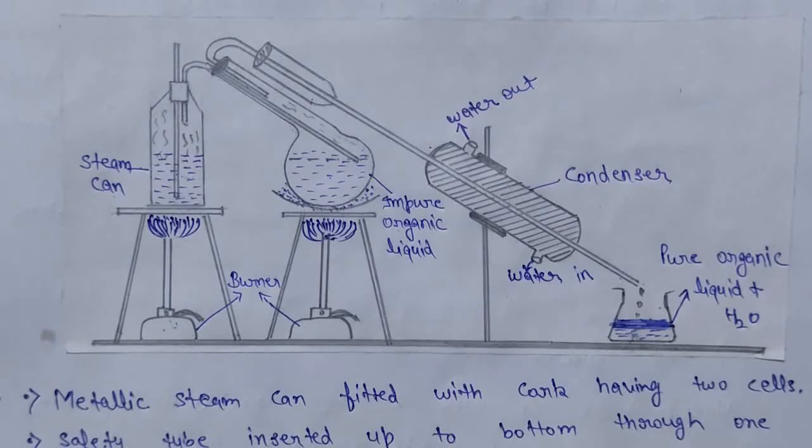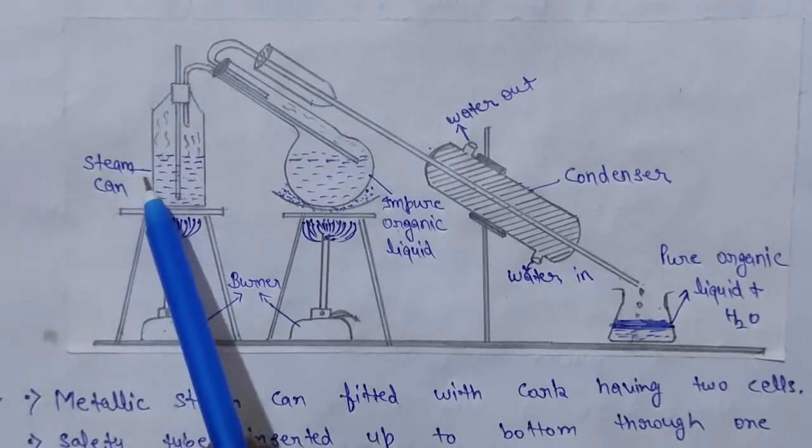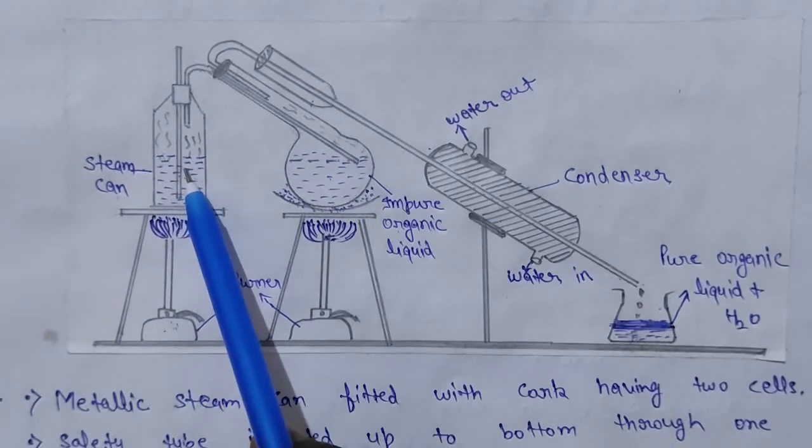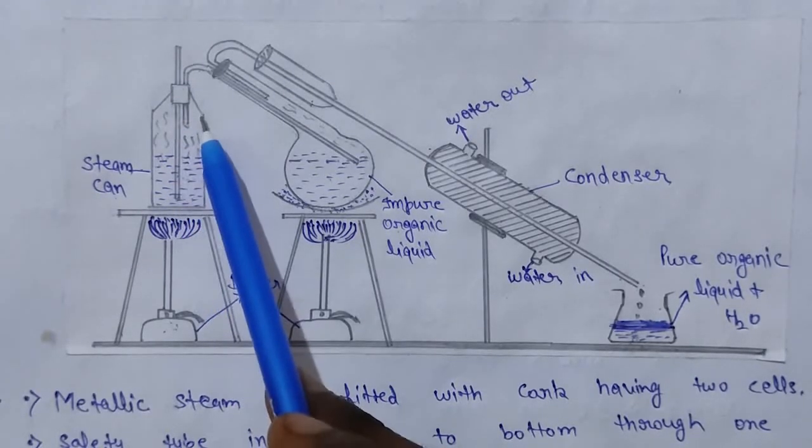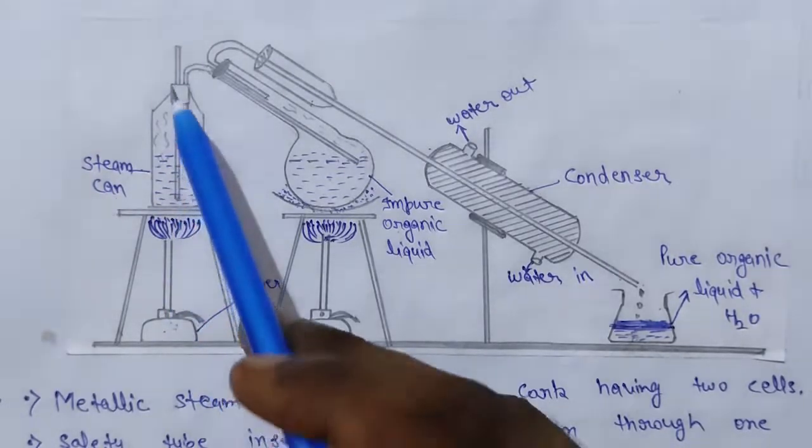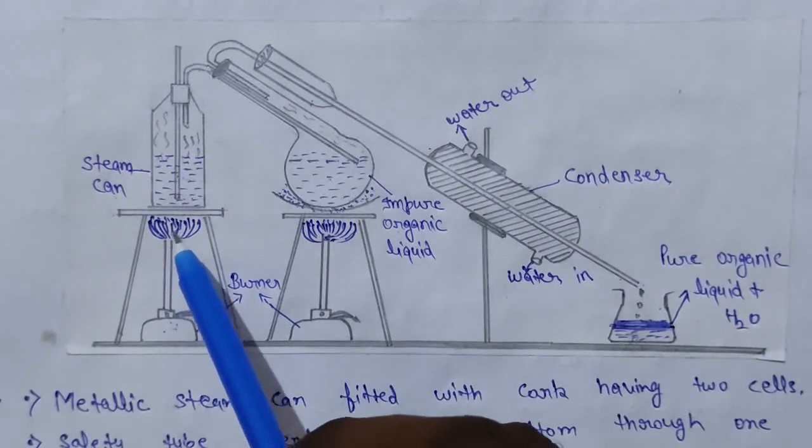Next is its working. We have here steam can, water solution here. We have a tube, pressure is maintained. How to do it? Here we have a burner to provide heat.